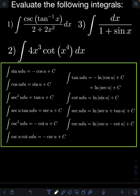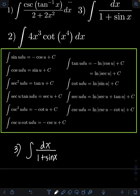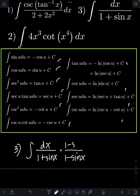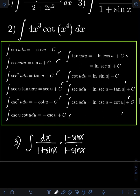For number 3, we have the integral of dx over 1 plus sin x. Looking at the integral, we cannot evaluate this using any of the formulas listed above, and there's no good u-substitution we can apply. So what I will do is multiply both the numerator and denominator by the conjugate of the denominator. The conjugate of 1 plus sin x is 1 minus sin x. So let's multiply both numerator and denominator by 1 minus sin x.